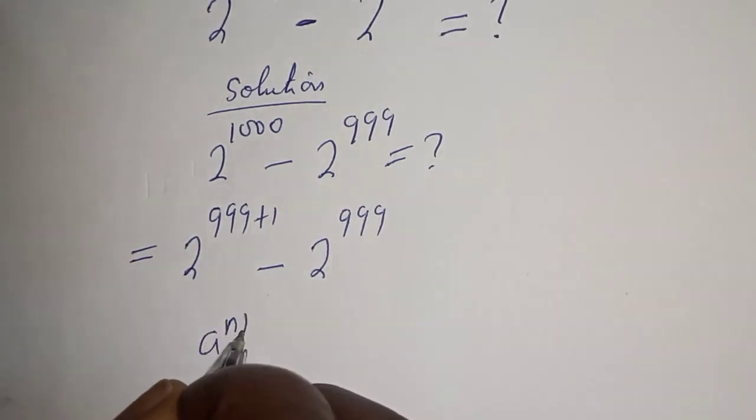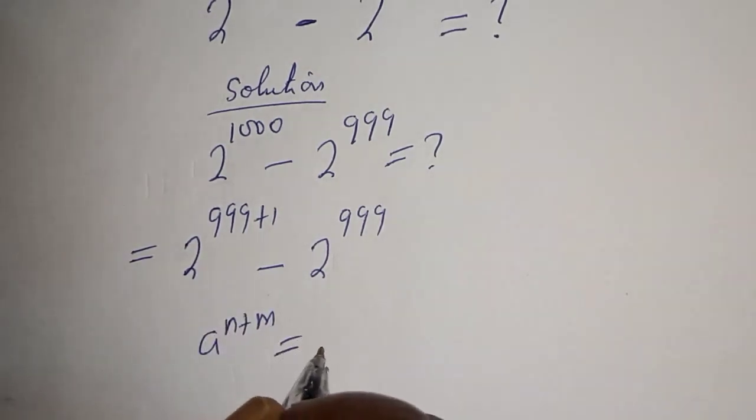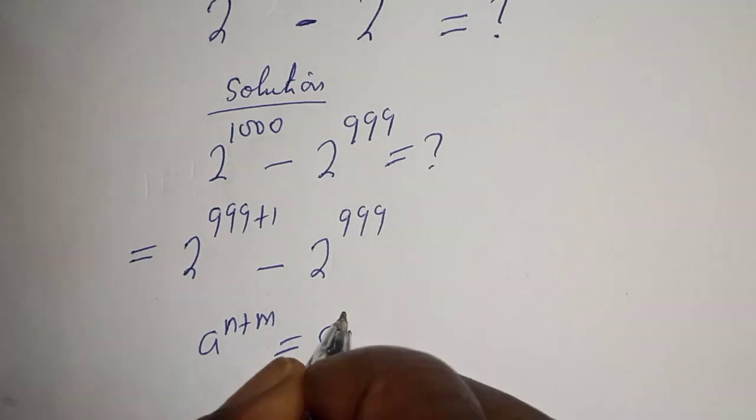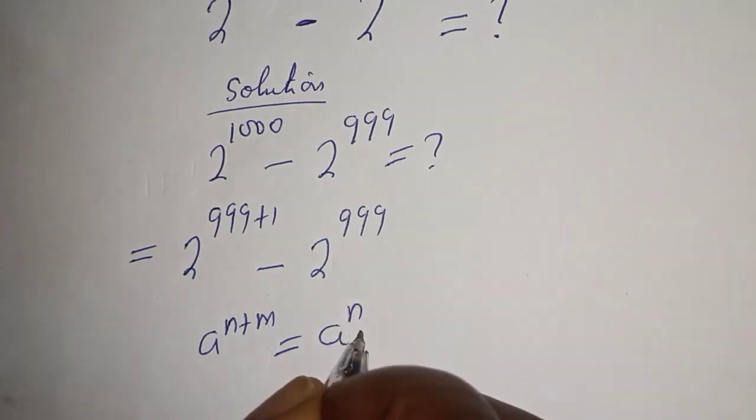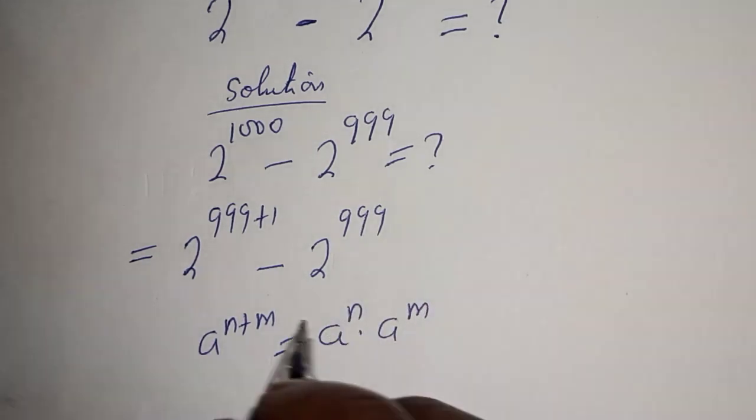If you have a raised to power n plus m, this is equal to a raised to power n multiplied by a raised to power m.